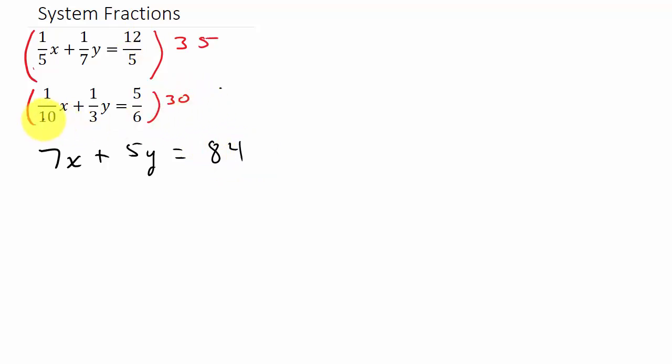And then same thing here. 10 goes into 30 three times. 3 times 1 is 3x. And then 3 goes into 30 ten times. So 10 times 1 is 10y equals. And then 6 goes into 30 five times. 5 times 5 is 25. Okay.